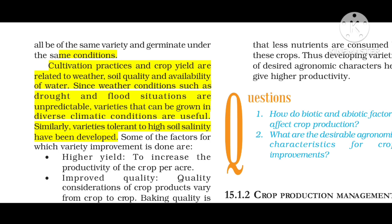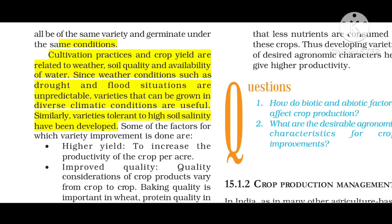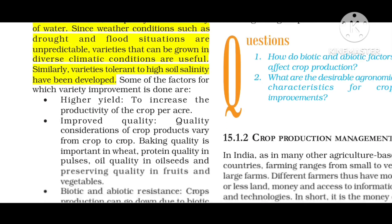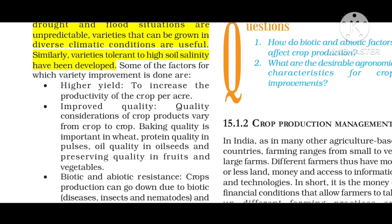Since weather conditions such as drought and flood situations are unpredictable, varieties that can be grown in diverse climatic conditions are useful. That is why some varieties have been developed — so soil is now developing some of the factors for which variety improvement is done.